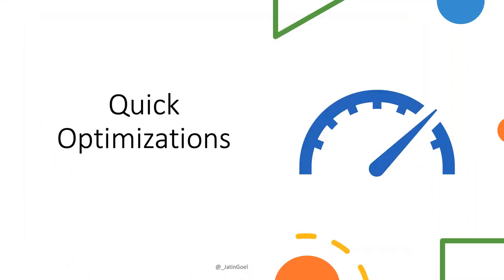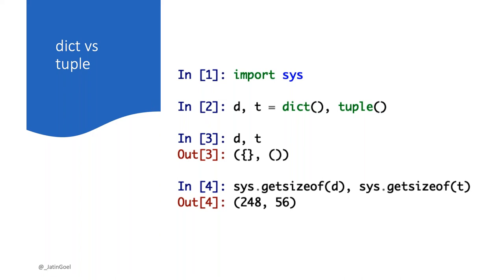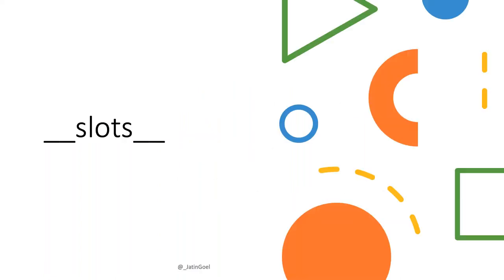Let's look at quick optimizations. First, dictionaries versus tuples. A dictionary stores three values per entry: the hash, a reference to the key, and a reference to the value. An empty dictionary takes 248 bytes of memory; an empty tuple takes only 56 bytes. Also, when a dictionary reaches its capacity threshold, it doubles in size — jumping from 248 to around 520 bytes.